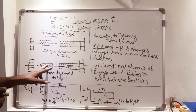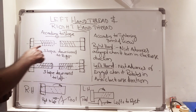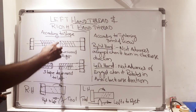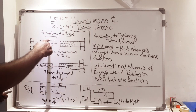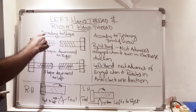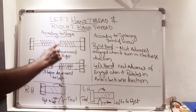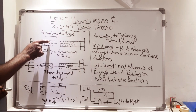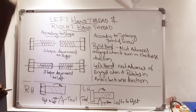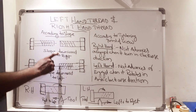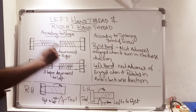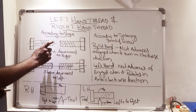Here I have drawn two figures — line diagrams of the threaded portion. In the first figure, the thread's slope is downward to the right. According to slope, if the slope of the thread is downward to the right, then it is called a right-hand thread.